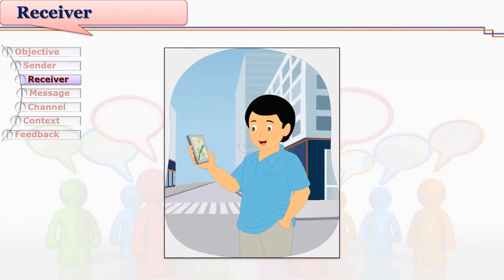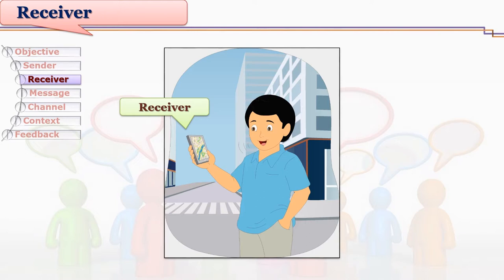Another example: Sohail gives oral instructions to a search engine, and the search engine produces results. You might have used search engines where instead of typing keywords, you just spell out the keyword orally and the engine searches all relevant information. Here the receiver is the search engine and the machine on which it runs — the engine receives oral instructions from Sohail and produces intended results.